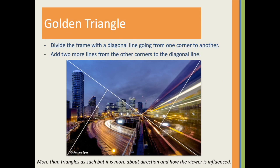Let's move on to something trickier — the golden triangle. That's very much like the rule of thirds but instead of a grid of rectangles, we have triangles. We divide the frame with a diagonal line coming from one corner to the other, then add two more lines from the other corners to the diagonal line, dividing the frame into four triangles. As with the rule of thirds, we use the lines — the triangles in this case — to help us position the various elements in the scene.